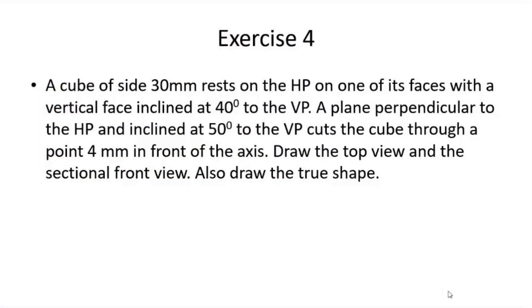This is the fourth exercise in sections of solids. A cube of side 30 millimeter rests on the HP on one of its faces with a vertical face inclined at 40 degrees to the VP. A plane perpendicular to the HP and inclined at 50 degrees to the VP cuts the cube through a point 4 millimeter in front of the axis. Draw the top view and the sectional front view, and also draw the true shape.